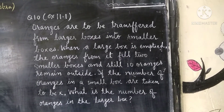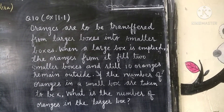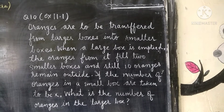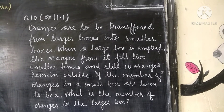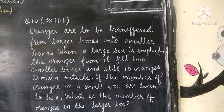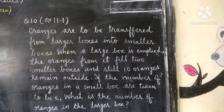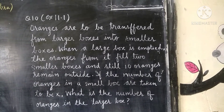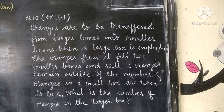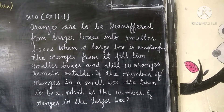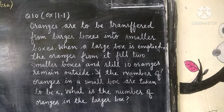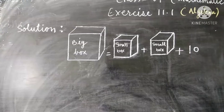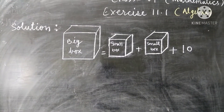If the number of oranges in a small box is taken to be x, what is the number of oranges in the larger box? Let's see the solution. In one large box there are some oranges. We don't know how many, but when we transfer them into two small boxes, each small box gets x oranges.